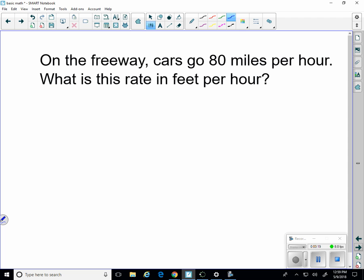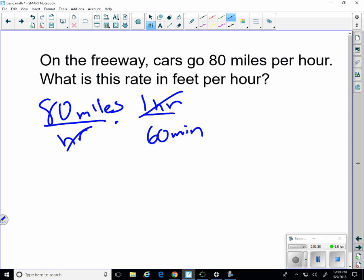On the freeway, cars go 80 miles an hour. What is the rate in feet per hour? So 80 miles per hour. One hour is 60 minutes. How do I know the hour goes on top? Well, I know it has to cancel. So that would be 80 divided by 60. That would be miles per minute. But we want feet per hour. Oops.